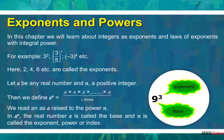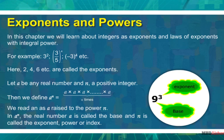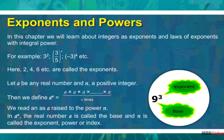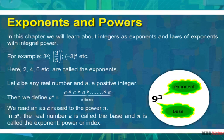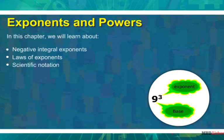In this chapter we will learn about integers as exponents and laws of exponents with integral power. For example, 3 squared, 3 upon 5 to the power 4, minus 3 to the power 4, etc. Here 2, 4, 6, etc. are called the exponents. Let a be any real number and n a positive integer, then we define a to the power n as the product of a, n times. We read it as a raised to the power n. In a raised to the power n, the real number a is called the base and n is called the exponent, power, or index. In this chapter we will learn about negative integral exponents, laws of exponents, and scientific notation.